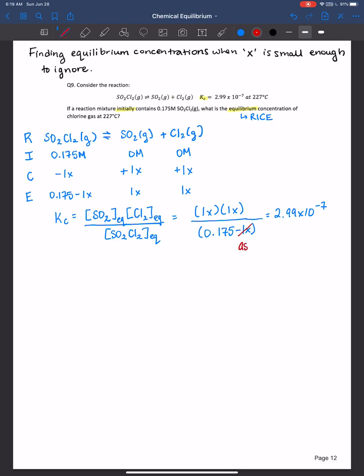So assume x is small enough to ignore, then we have 2.99 times 10 to the negative 7th is equal to, and I'm just multiplying 1x times 1x, which is x squared over 0.175. Now when we look at that algebra equation, we're like, this is way more manageable.